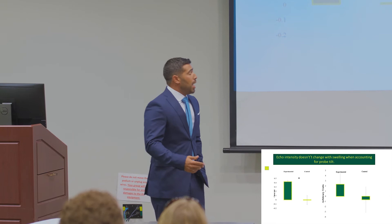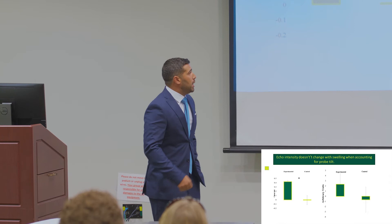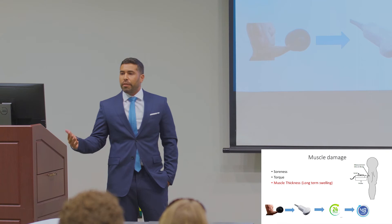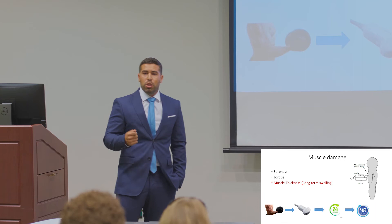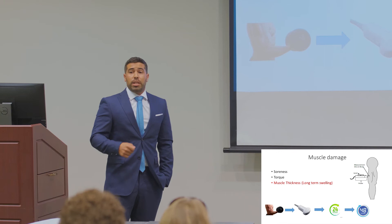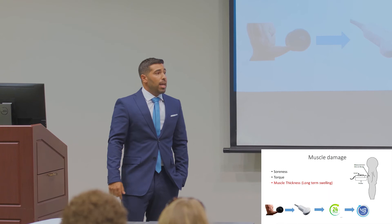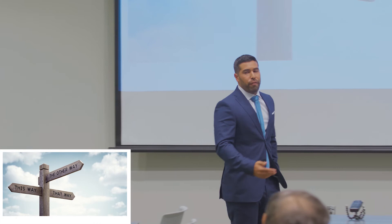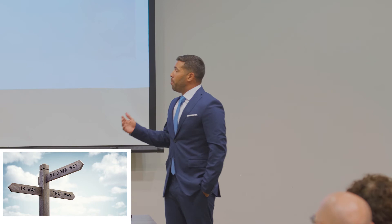That led us to think even more critically when reading about echo intensity in the literature, and that's how we got to the muscle damage study. One of the indirect indicators for muscle damage is long-term swelling — as opposed to the acute changes we induced earlier, this represents more chronic changes in the muscle. We measured at 24 and 48 hours post-exercise and found very interesting findings as well — there were no clear directional findings. Based on this, we suggested that due to the inconsistency, echo intensity cannot reliably detect acute or long-term changes.